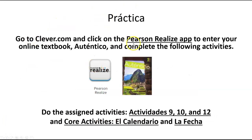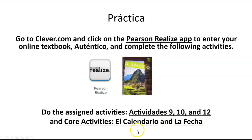Go to Clever.com, click on the Pearson Realize app to enter your online textbook Auténtico, and complete the following activities: assigned activities 9, 10, 12, and core activities El Calendario and La Fecha. Please go in order, and thank you for coming to the session. See you at the next one.